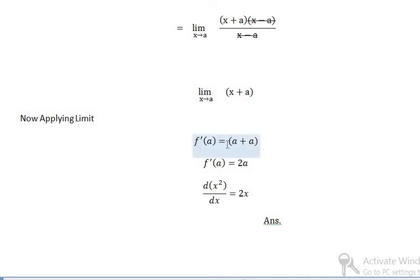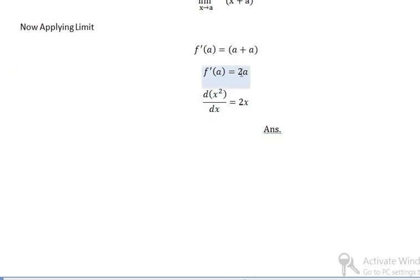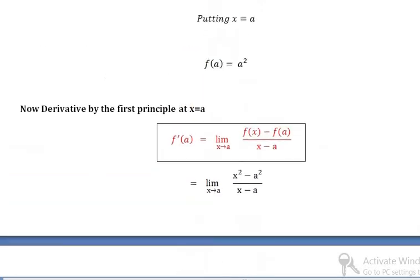Applying the limit, f dash of a equals a plus a, because as x tends to a, x becomes a. So a plus a equals 2a, therefore f dash of a is equal to 2a. Since a is equal to x, we get the final answer.